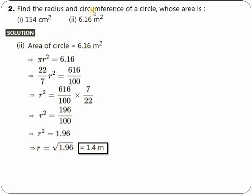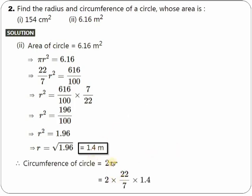So I got the radius as 1.4 meters. Now my job is to find the circumference. The circumference formula is 2πr. Put the values: pi is 22/7 and r is 1.4. Do the cancellation and simplify. You will get your answer to be 8.8 meters. With this we have completed this particular problem. Pause the video and note down your solution.